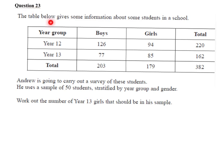Question 23. The table below gives some information about students in a school. Andrew is going to carry out a survey of these students. He uses a sample of 50 students, stratified by year group and gender. Work out the number of year 13 girls that should be in his sample.